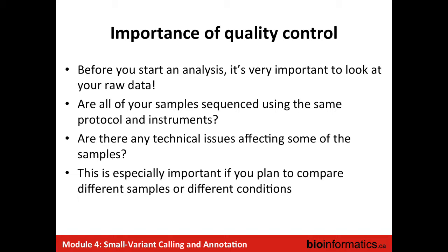As I said, quality control is really important before you start your analysis. What is really important when you do an experiment and want to compare samples is to use the same protocol and the same instrument for all different samples. Quite often people have done a project a few years ago and then don't choose the same protocol or instrument, and we clearly see artifacts in one group versus the other. That's why normalization and quality control are critical, especially for SNV calling.